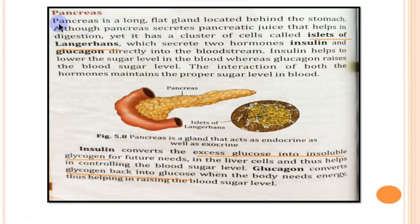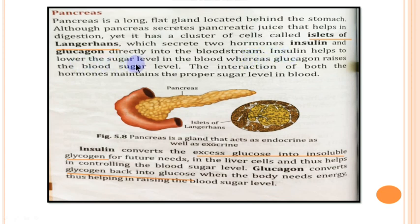The pancreas is known as a heterocrine gland because it contains an exocrine part and an endocrine part. The exocrine part secretes pancreatic juice containing enzymes that help in digestion. The endocrine part contains the islets of Langerhans, which secrete two kinds of hormones: insulin and glucagon, directly into the bloodstream. Insulin lowers blood sugar level whereas glucagon raises it, and their opposing functions work together to maintain blood sugar balance.